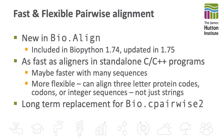I'd like to single out a couple of new bits of functionality. The first is fast and flexible pairwise alignment under the BioAlign module. This is written in C and can be as fast as aligners in standalone C or C++ programs — maybe faster with many sequences. It also isn't restricted to just aligning pairs of strings; you can align three-letter amino acid sequences, codons, or arrays of integers.